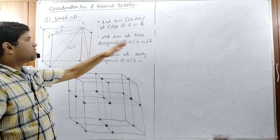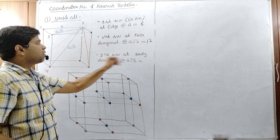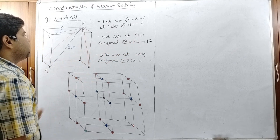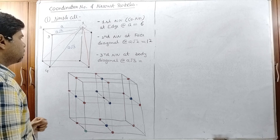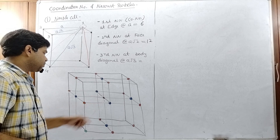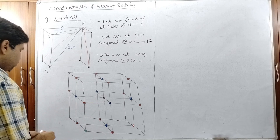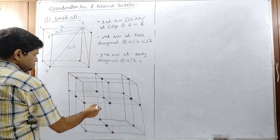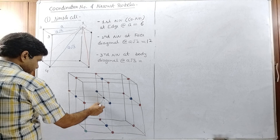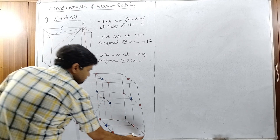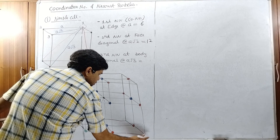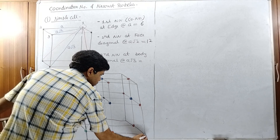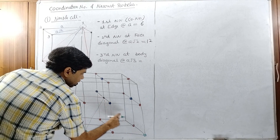The second nearest neighbors are twelve, located at the face diagonal at distance a√2. The third nearest neighbors are present at the body diagonal at distance a√3.